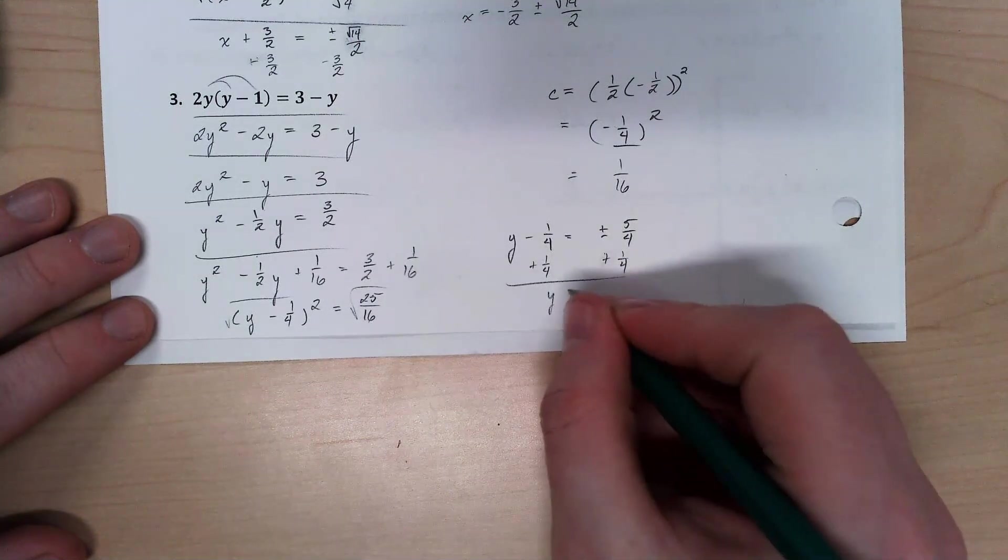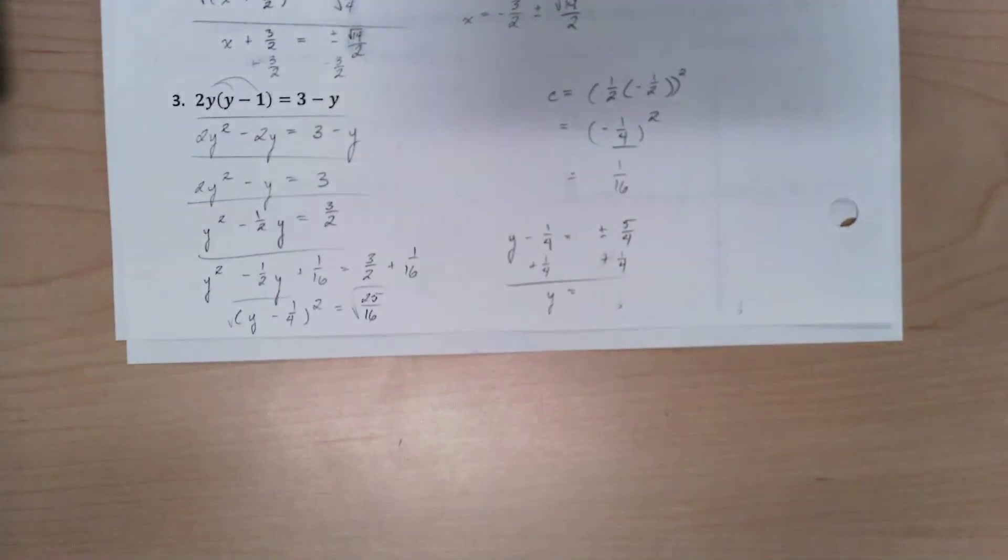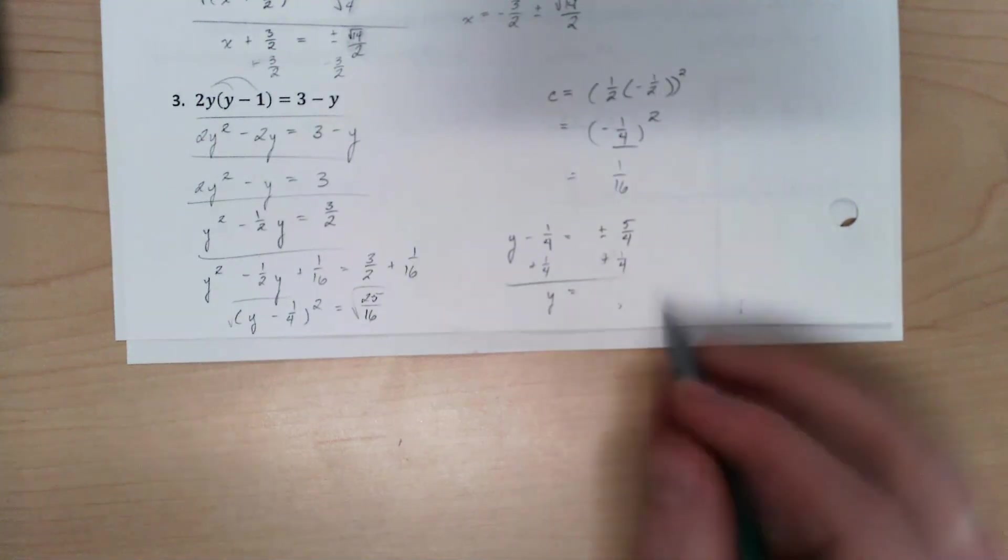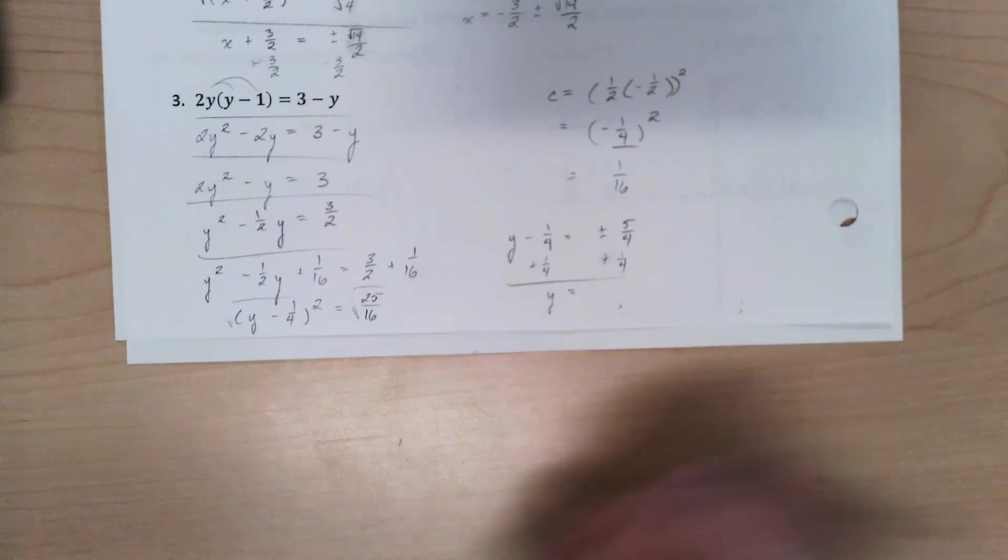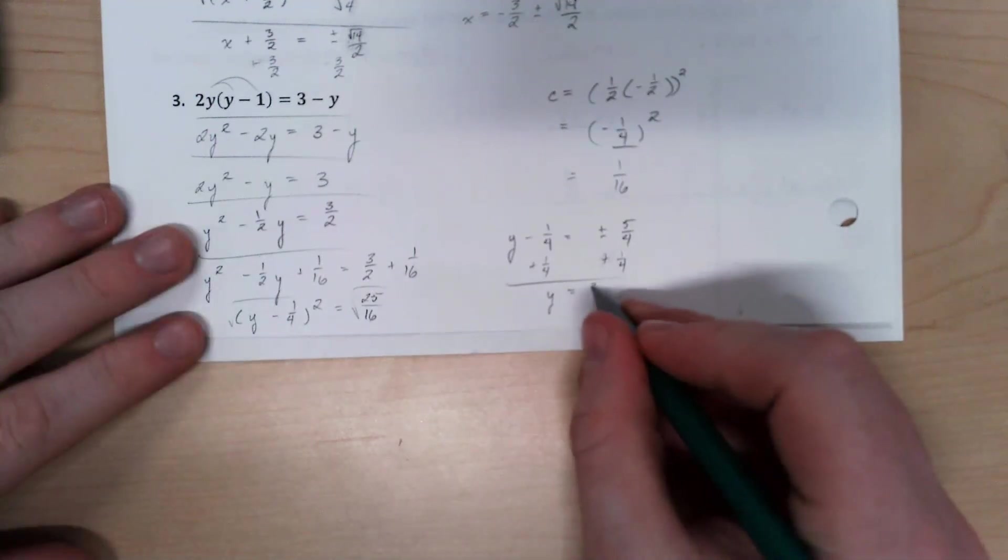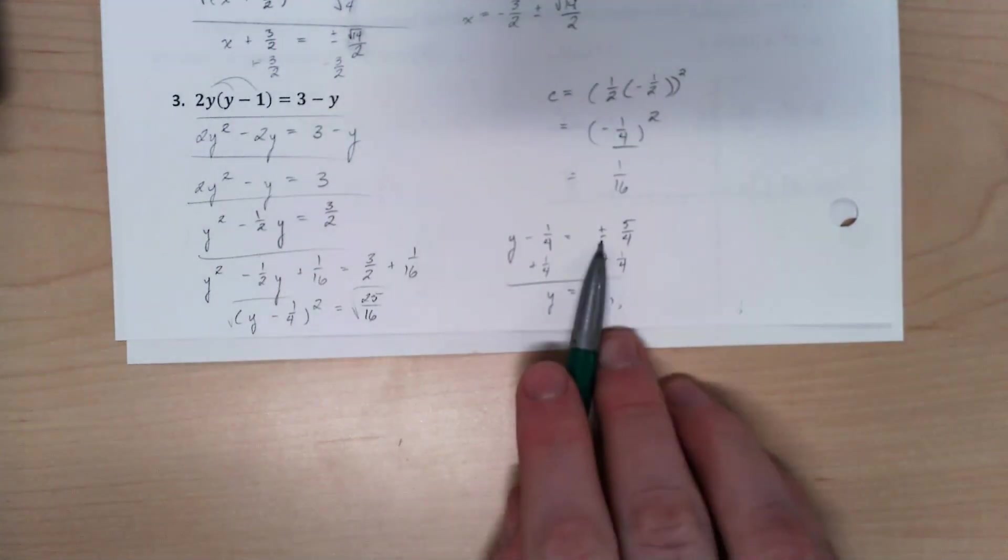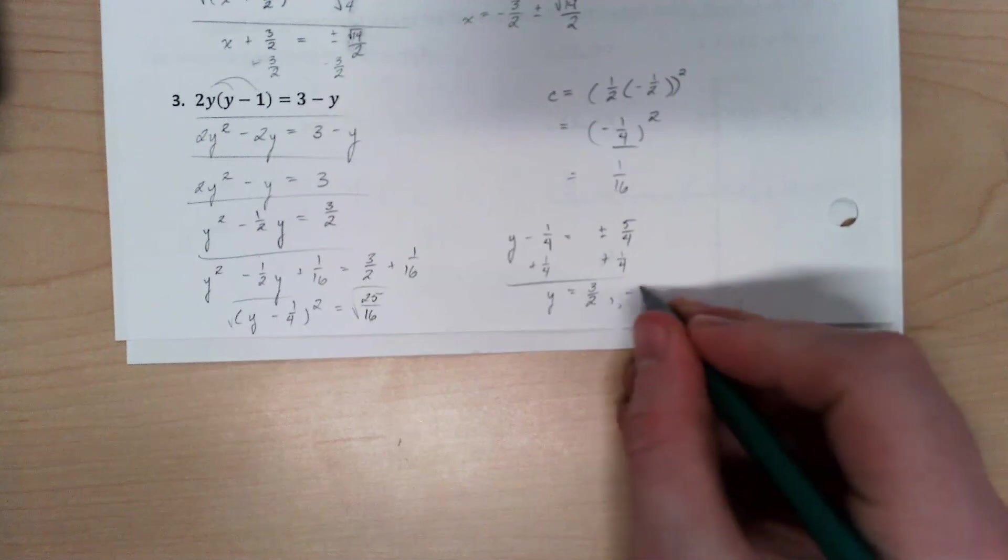So far I've presented my answer in this plus or minus form because I haven't had like terms. This time I do. I've got like terms here. So I can say 1 fourth plus 5 fourths is 6 fourths or 3 halves, and 1 fourth minus 5 fourths is negative 4 fourths or negative 1.